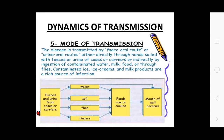Dynamics of transmission — five modes: water, soil, flies, and fingers. The disease is transmitted by the fecal-oral and urine-oral routes directly through hands, soil, feces, urine, or cases and carriers, and indirectly by ingestion of contaminated water, milk, and food through flies.